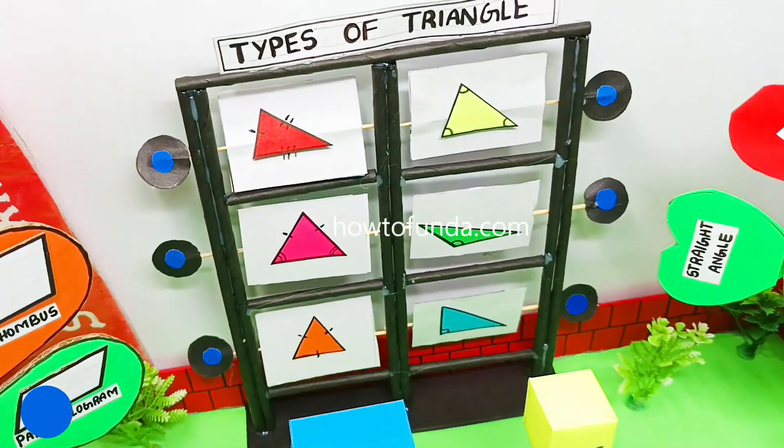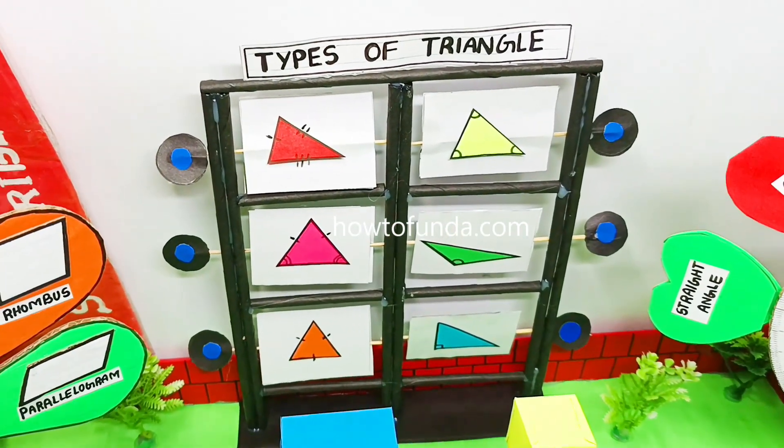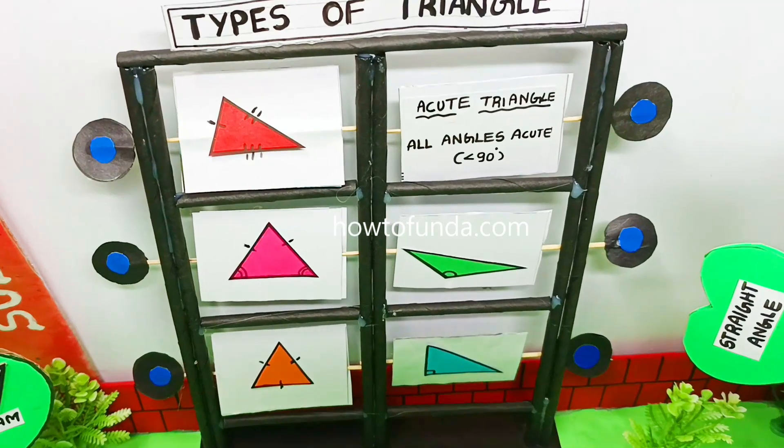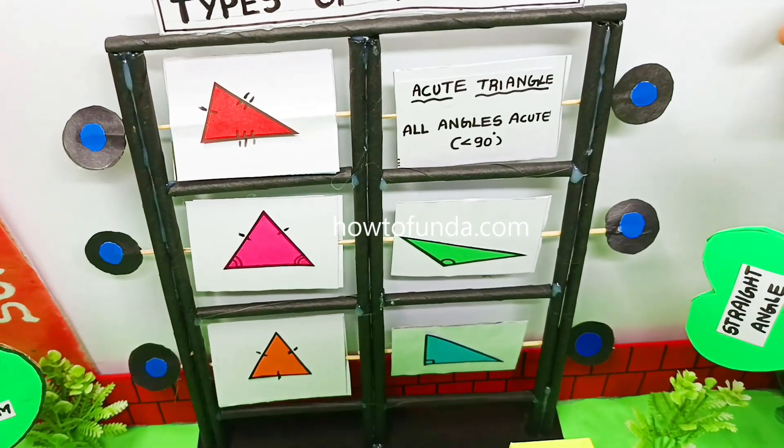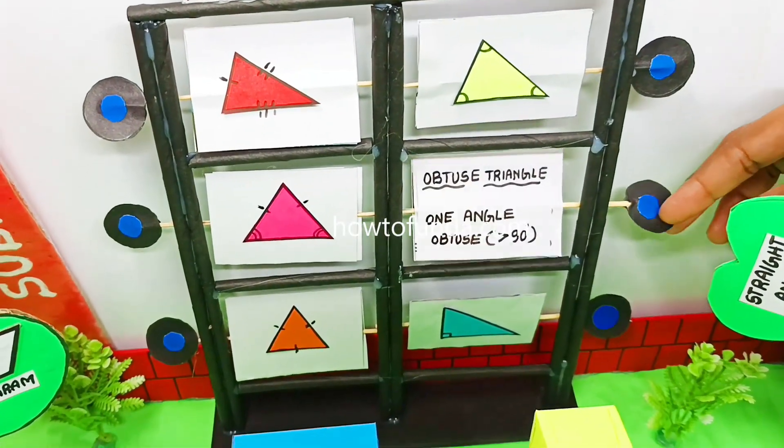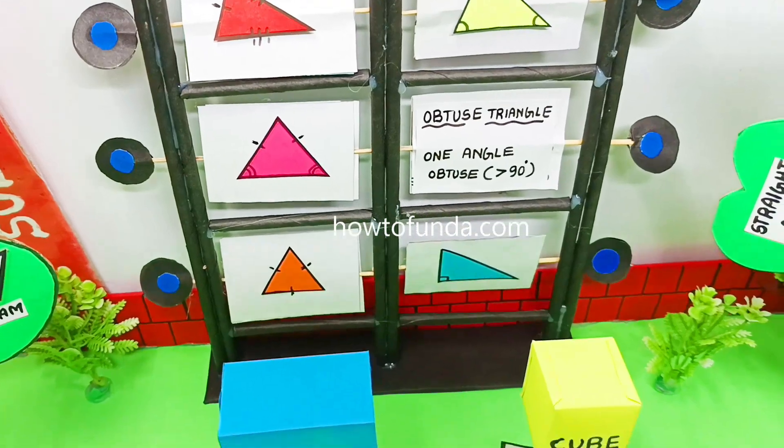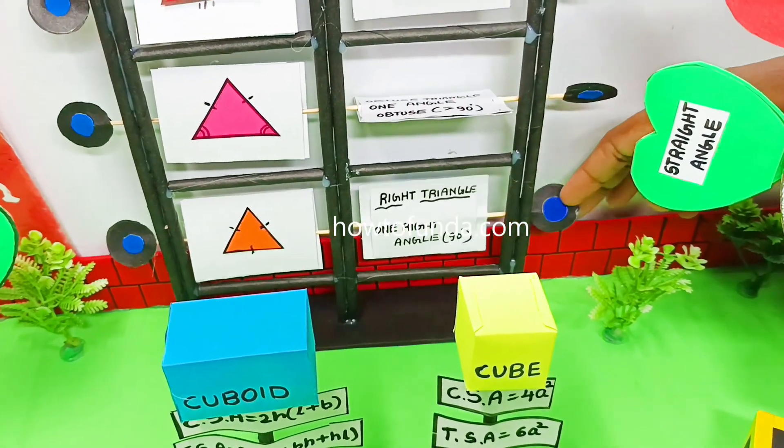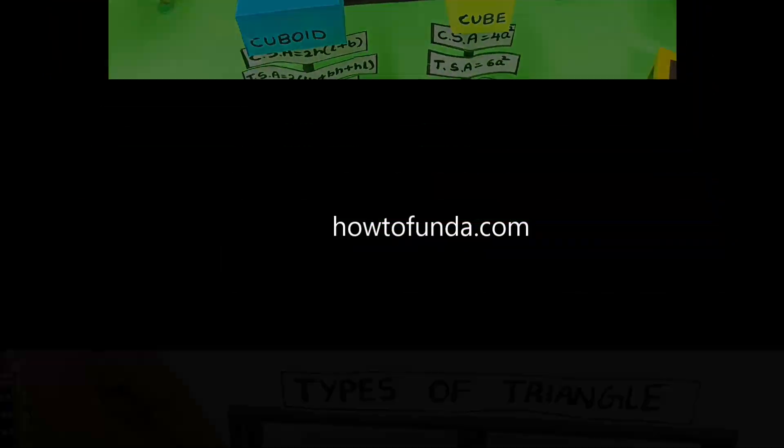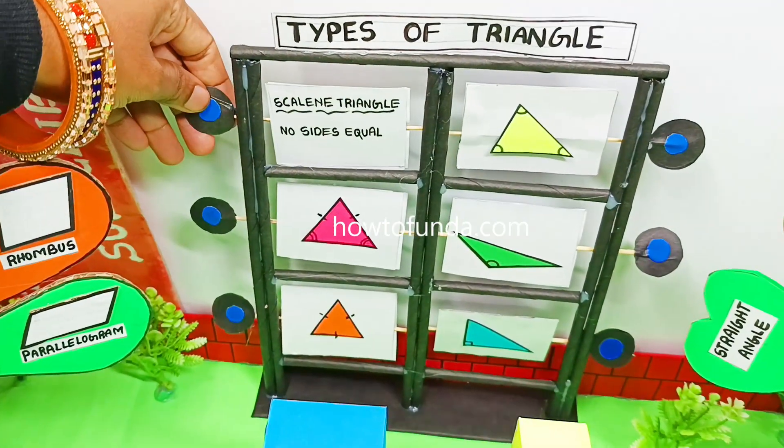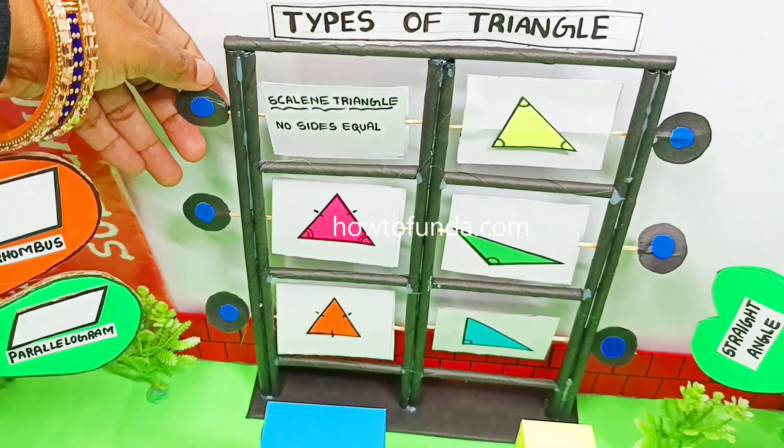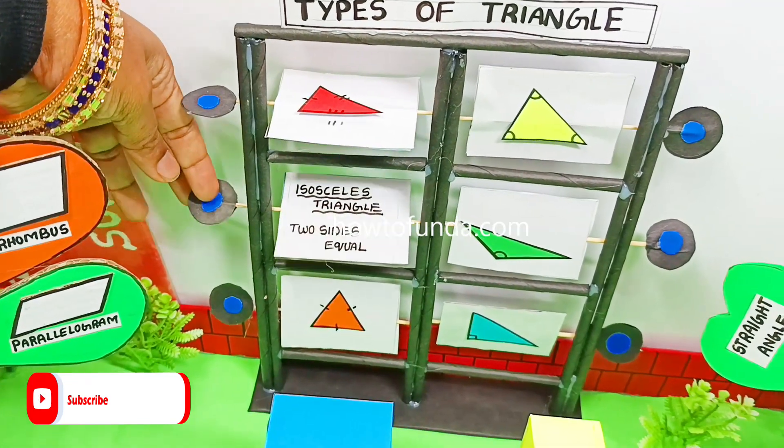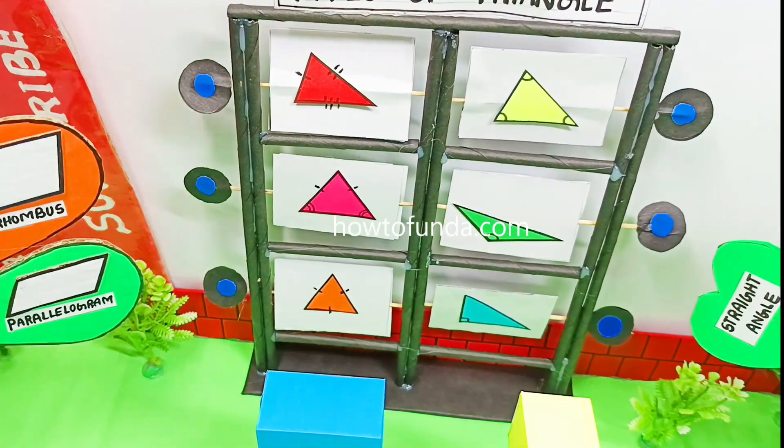We have given the types of triangles with their definitions: acute triangle, obtuse triangle, right angle triangle, scalene triangle, isosceles triangle, and equilateral triangle.